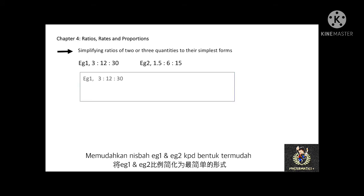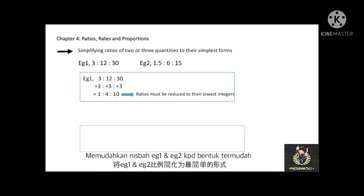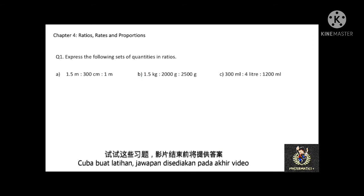Remember, ratios must be reduced to their lowest integers. In some cases, you may need to multiply quantities to get the lowest integers. Now let's pause the video for 5 minutes and try this question. The answers are provided at the end of this video.